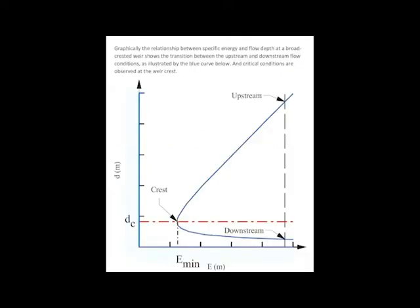Graphically, the relationship between specific energy and flow depth at the broad-crested weir shows the transition between upstream and downstream flow conditions, as illustrated on the graph, and critical flow conditions are observed at the weir crest.